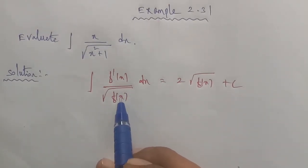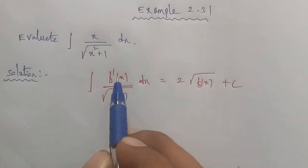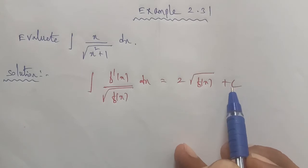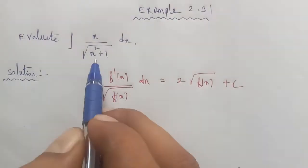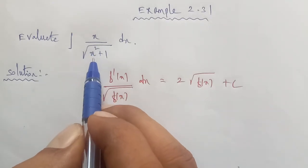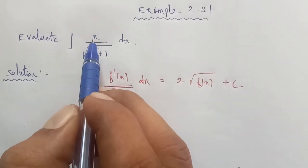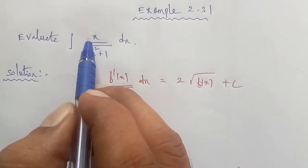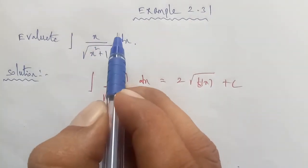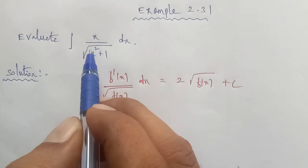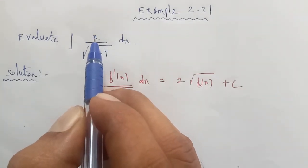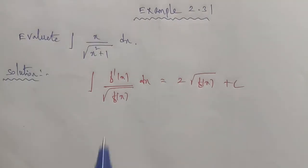In this sum, we identify the term under the square root as f(x), and check if its derivative appears in the numerator. Here f(x) = x squared plus 1, and differentiating gives 2x. In the numerator we only have x, so we note that the derivative of x squared is 2x, but we only have x — the coefficient 2 needs to be balanced.